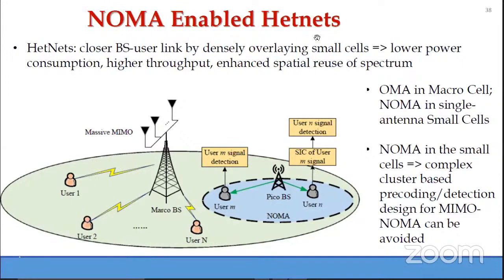NOMA combined with HetNet: in macro-cells we use massive MIMO with orthogonal multiplexing for each user, whereas in each small cell we make use of NOMA with single-antenna users and single-antenna base stations. This avoids complex cluster-based pre-coding detection design for massive MIMO-NOMA. So within macro-cells we use massive MIMO and orthogonal multiplexing, while in small cells we apply NOMA.